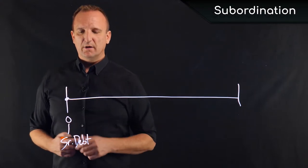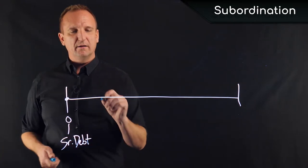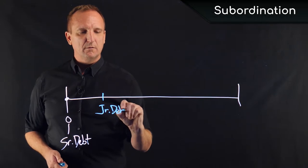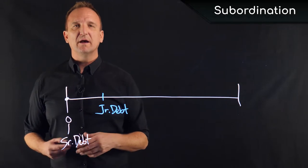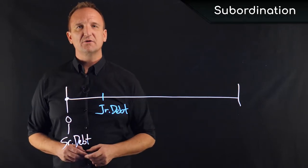So when we have senior debt on a property, if we go ahead and a little while later, we add some junior debt. The junior debt is subordinate to the senior debt in that its claim on the title was made after the senior debt.